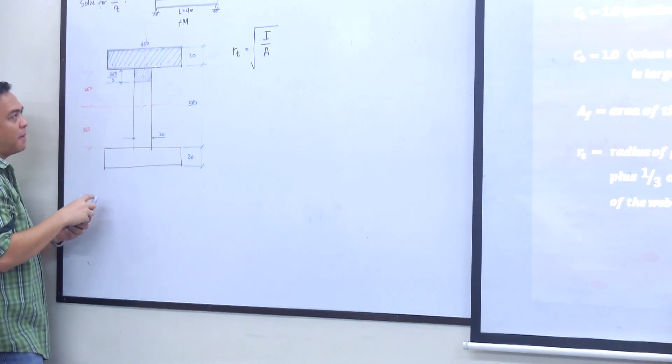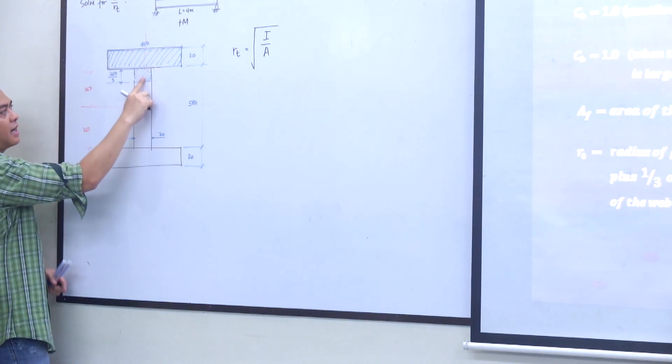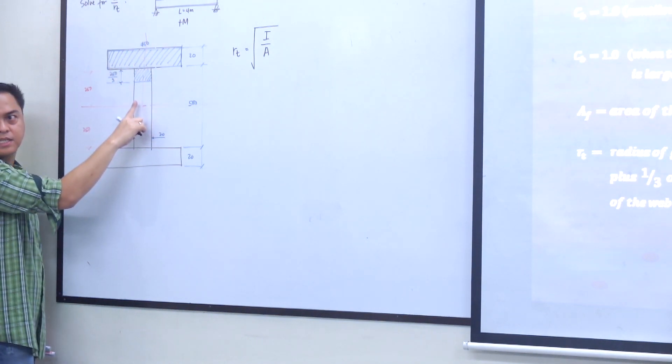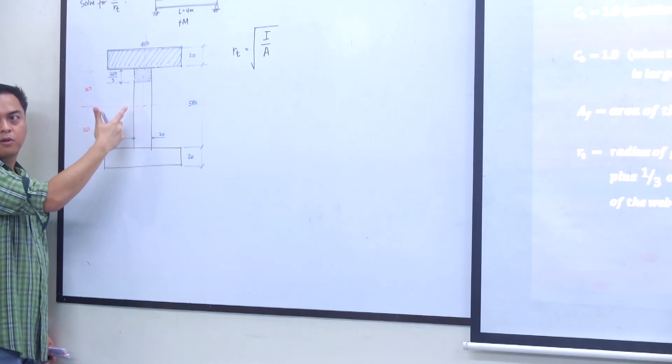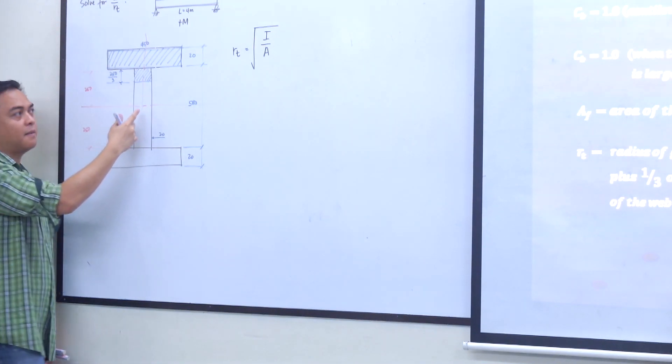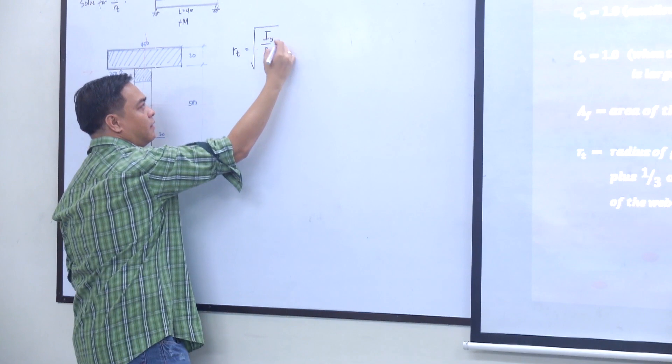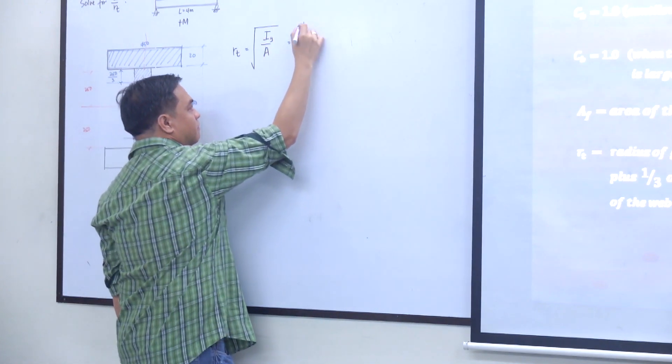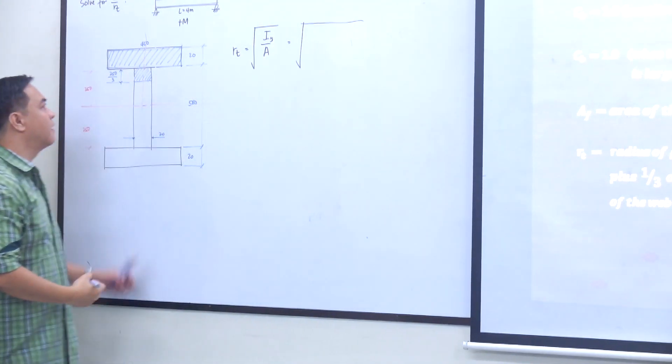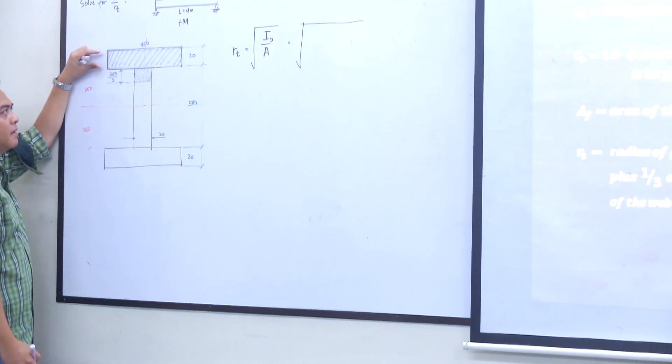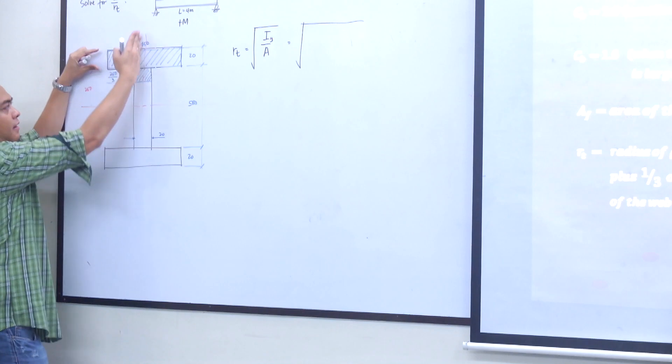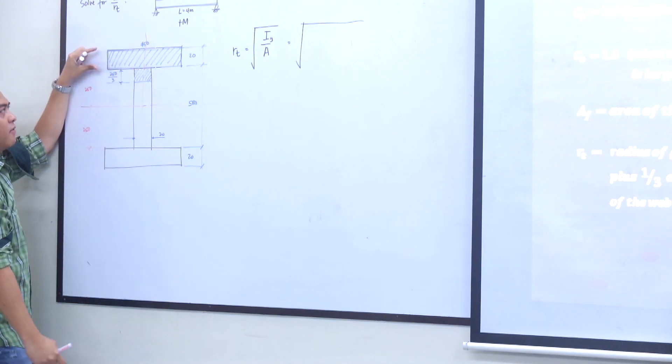What would be the moment of inertia of this shaded area above this axis? That's the moment of inertia of this flange about the axis at the bottom of the compression flange, and above the axis at the top of the web.